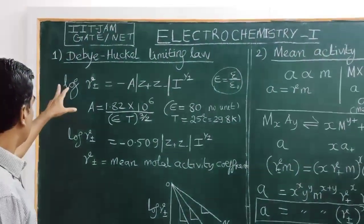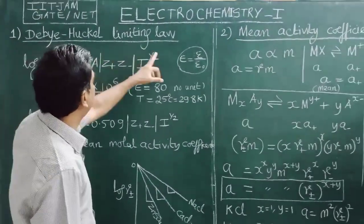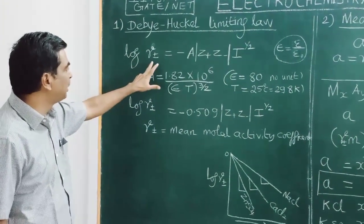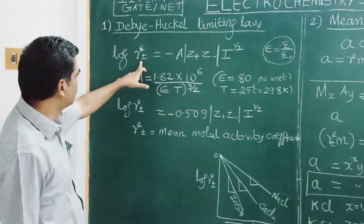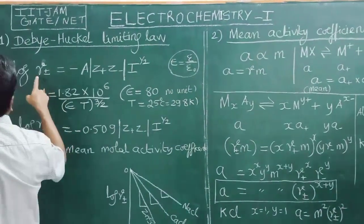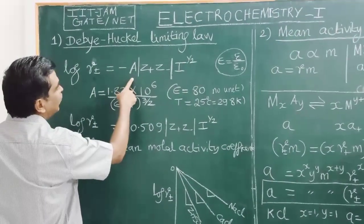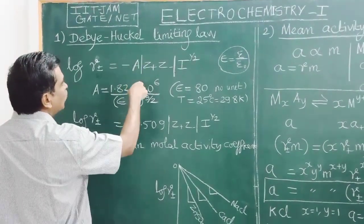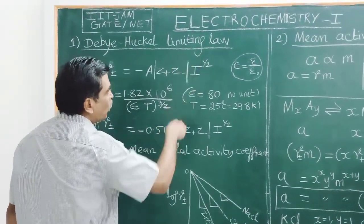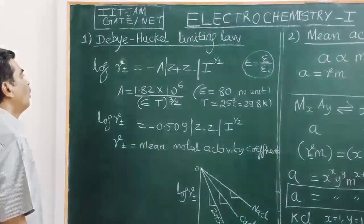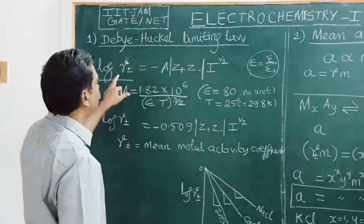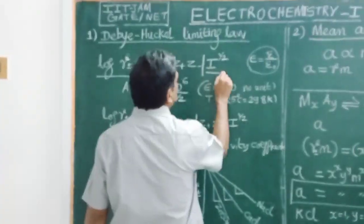Let us now continue with the Debye-Hückel Limiting Law. What is the Debye-Hückel Limiting Law? It gives the relation between the mean activity coefficient: log gamma± equals minus A times |z₊z₋| times I^(1/2). This gives the relation between the log of mean activity coefficient and the ionic strength.